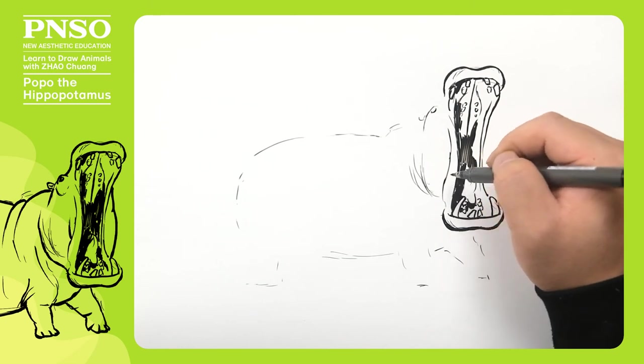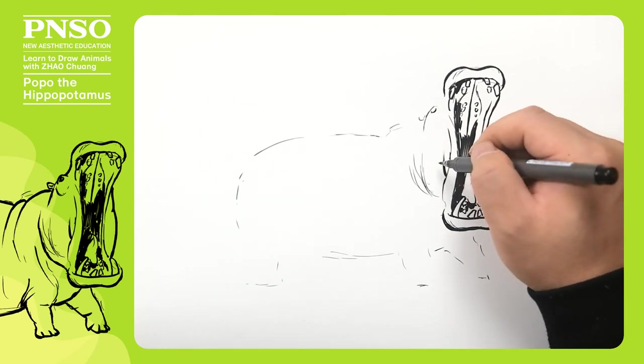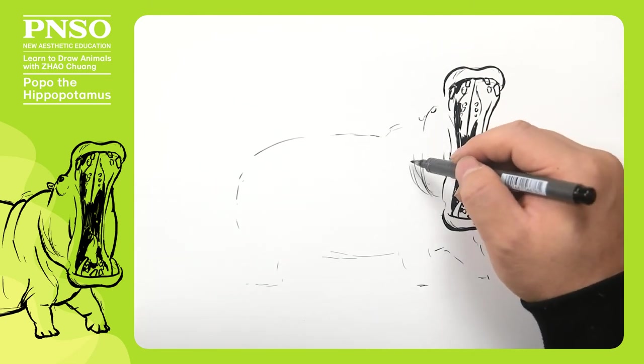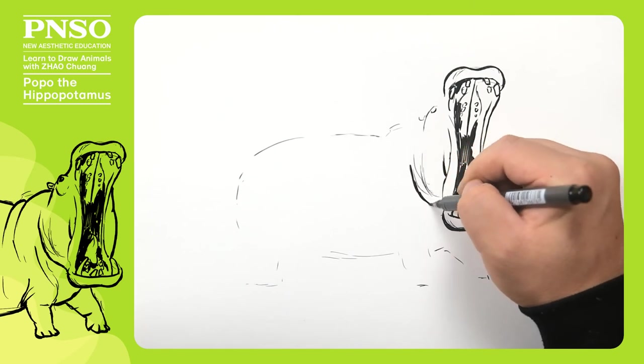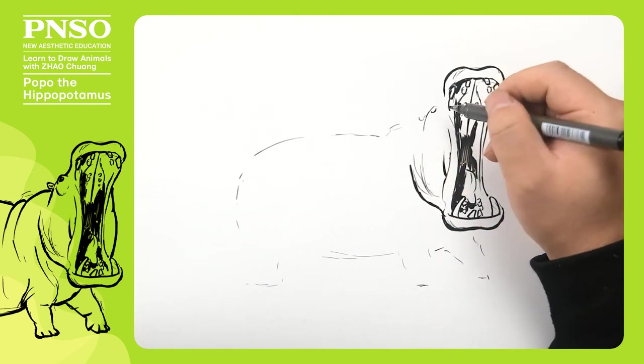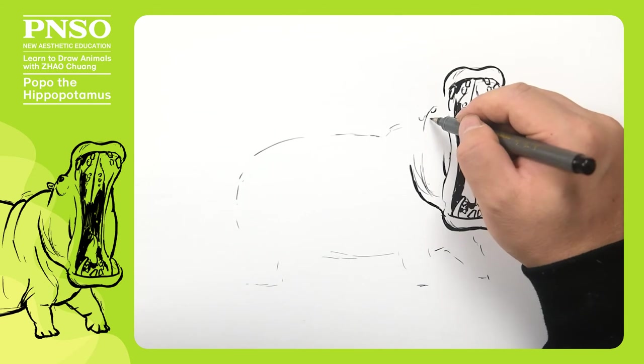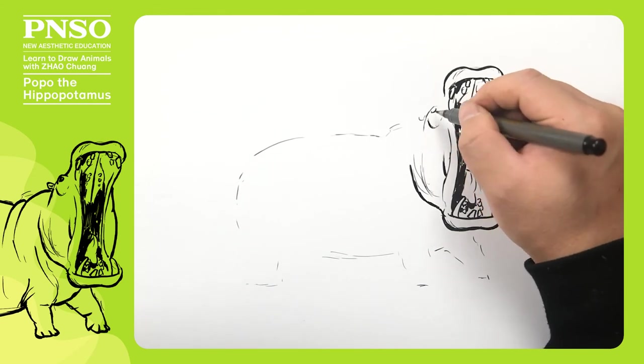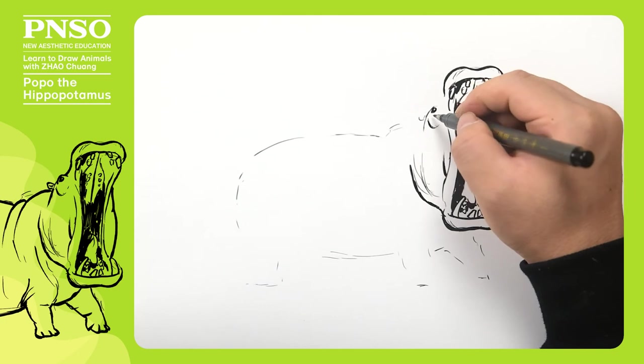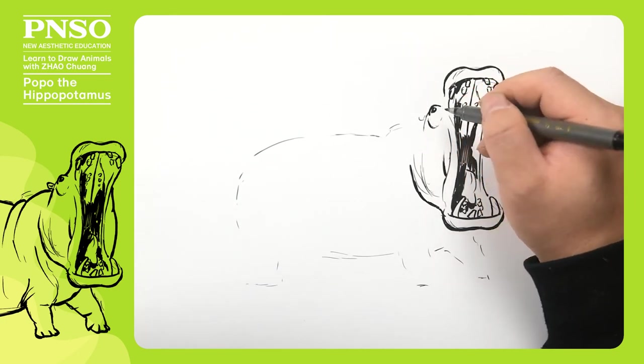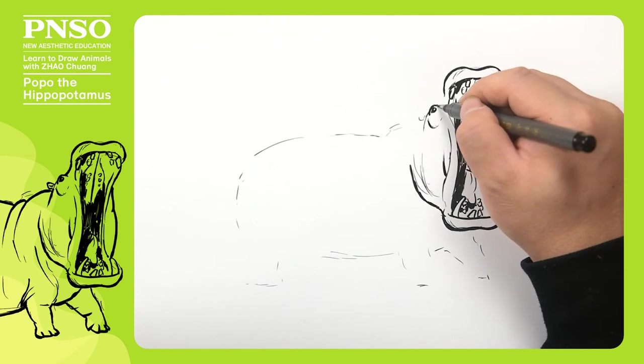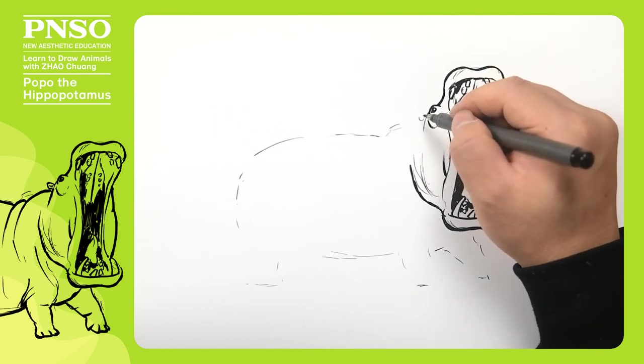Then we draw its skin on the outside. Next, we draw its face with its cheekbones. Here and then its small eyes. From this angle, we can see its eye slightly protruding upward. Then we draw its one small ear behind the eye.